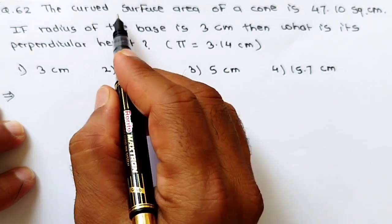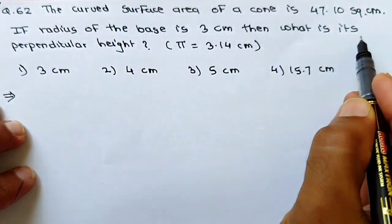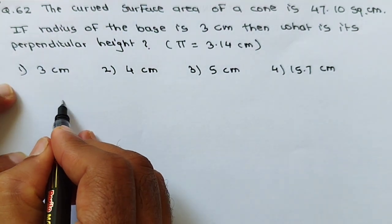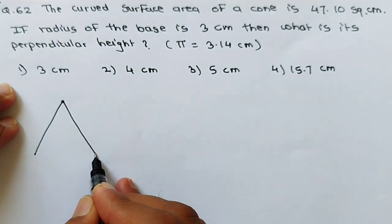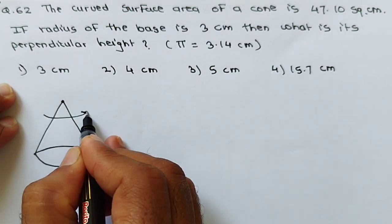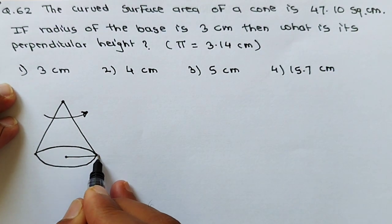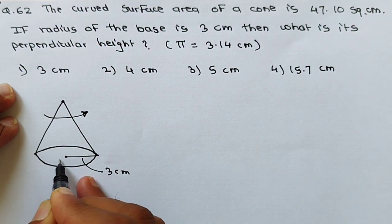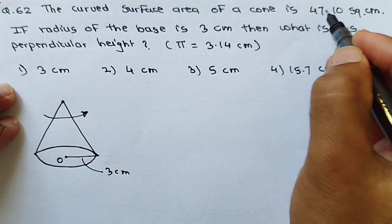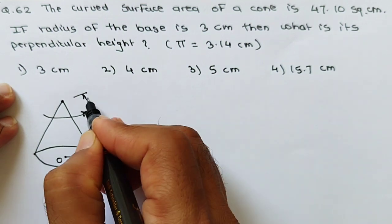See question number 62. The curved surface area of a cone is 47.10 square centimeters. If the radius of the base is 3 centimeters, then what is its perpendicular height? I will draw a rough sketch of the cone. The curved surface area is given as 47.10, and radius is 3 centimeters. With the help of this area, we can calculate the slant length L, because the formula for curved surface area of a cone is pi R L, where L is the slant height.